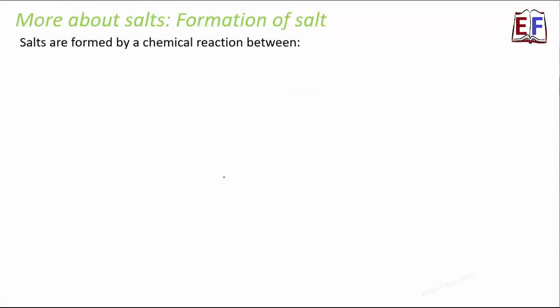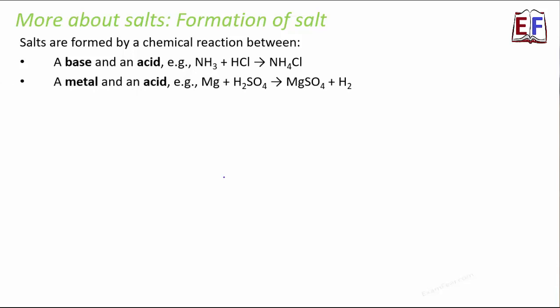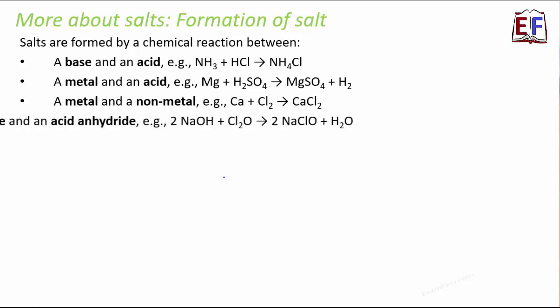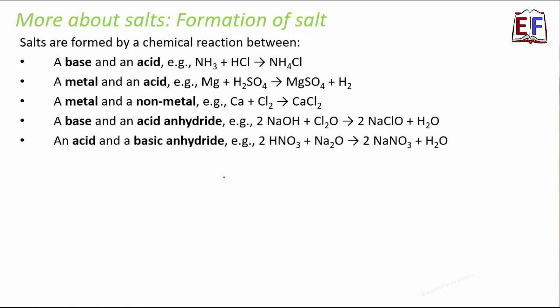Here we see that salts are formed by chemical reaction between so many different things like a base and an acid, which is something that we always knew. Besides that, a metal and an acid, just like magnesium plus H2SO4 forms MgSO4 plus H2, or a metal and a non-metal like calcium and chlorine. They combine together to form calcium chloride or a base and an acid anhydride or an acid and a basic anhydride. A lot of you might be wondering, what do we mean by anhydride? Anhydride basically is obtained by elimination of H2O. That means H2O is removed from something. So whatever is left out, that is anhydride.